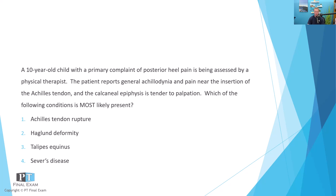Which of the following conditions is most likely present? Number one, Achilles tendon rupture. Two, Haglund deformity. Three, Talipes equinus. Four, Sever's disease.